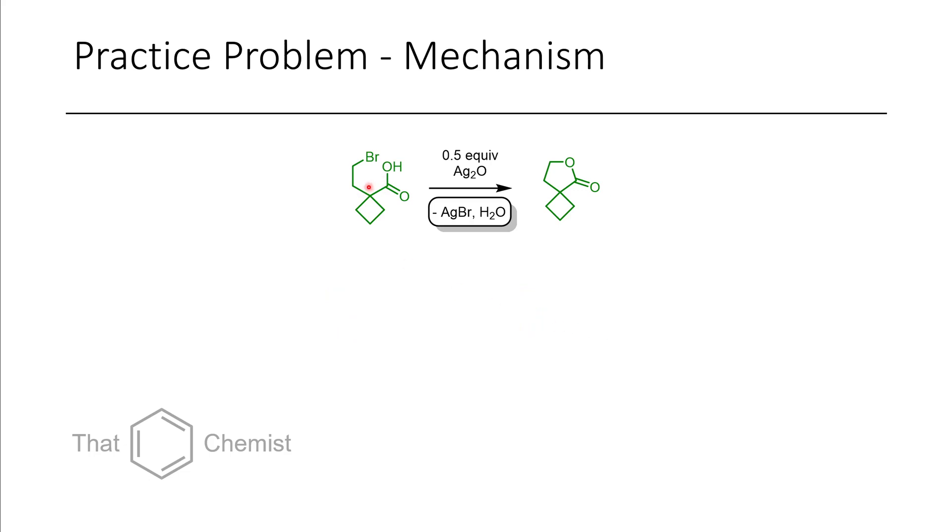First we take the carboxylic acid, we treat it with silver oxide, and the oxide is a base, so it deprotonates the H of the carboxylic acid. Now that we have a carboxylate, carboxylates are good nucleophiles. In the presence of silver, coordination to the bromide makes it an even better leaving group, and the oxygen can attack at that position, displacing the bromide, forming the lactone product.